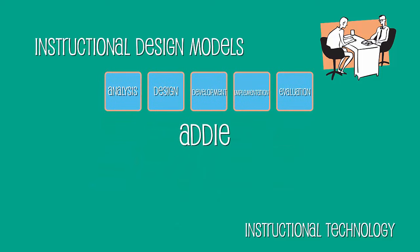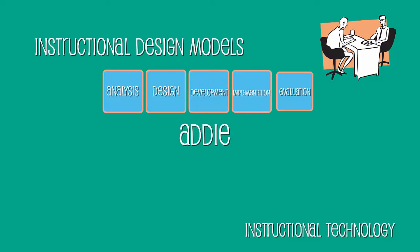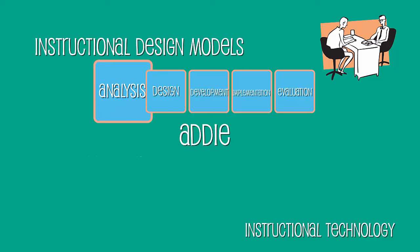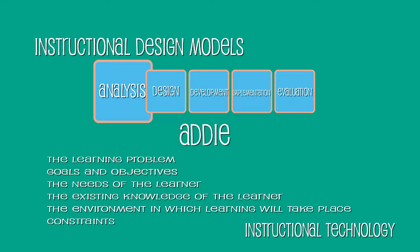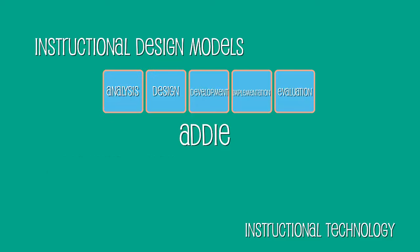The ADDIE model of instructional design is a systematic model consisting of five phases: analysis, design, development, implementation, and evaluation. The model's original authors are unknown, but multiple variations and versions exist today. With this model, each step of the process feeds the next. During the analysis phase, the designer identifies many things including the learning problem, goals and objectives, the needs of the learner, the existing knowledge of the learner, the environment in which learning will take place, constraints, and delivery options. The key word for this phase is identify.